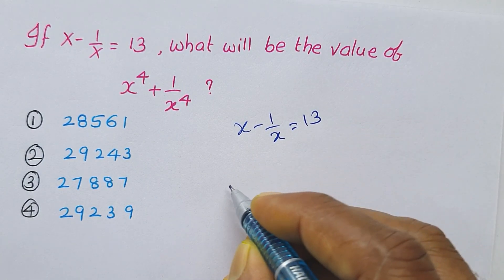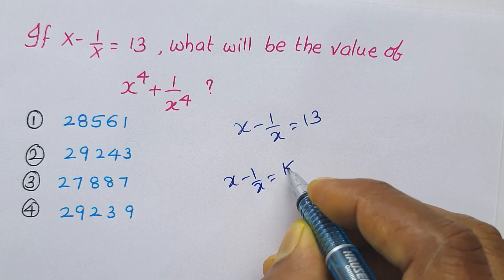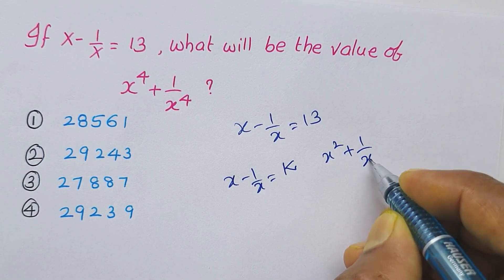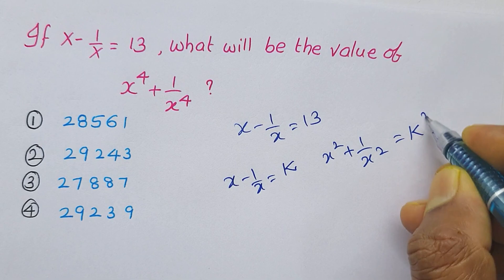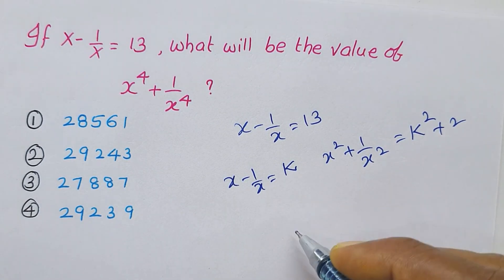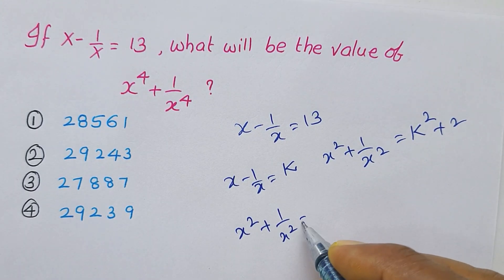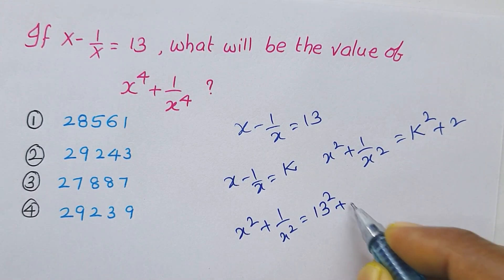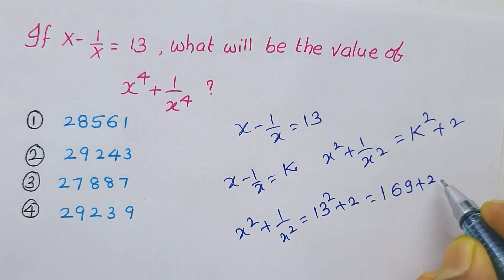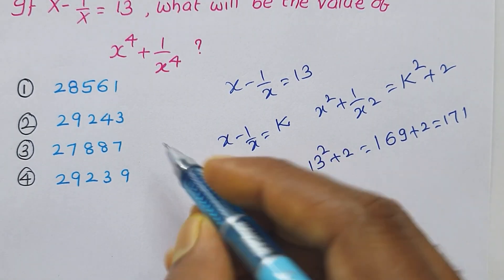Given x minus 1 by x is equal to 13, we know the formula: if x minus 1 by x equals k, then x squared plus 1 by x squared equals k squared plus 2. So x squared plus 1 by x squared equals 13 squared plus 2, which is 169 plus 2, equal to 171.